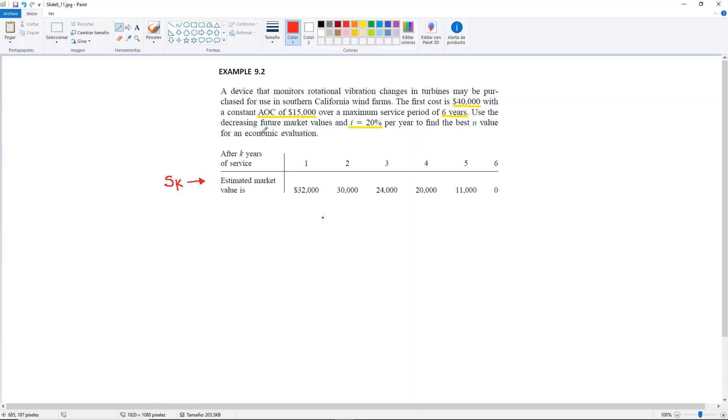So this estimated market value will be your SK. That's why it says here after K years because this will be S for year one, for year two, year three, year four, year five, year six.